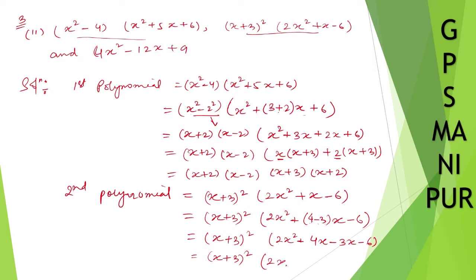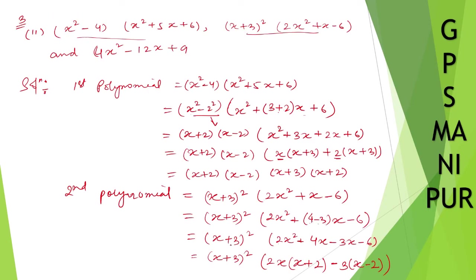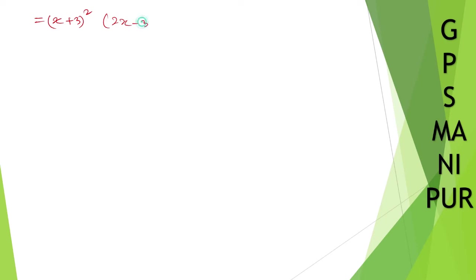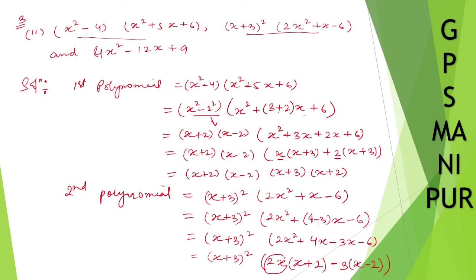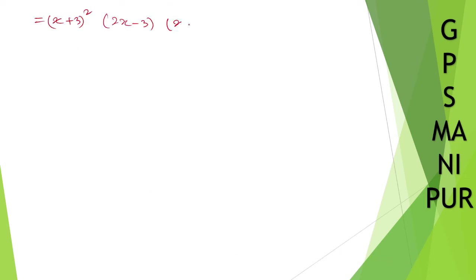Taking 2x common gives (x+2), and taking minus 3 common from the last two also gives (x+2). So 2x squared plus x minus 6 factors as (2x-3)(x+2). Therefore the second polynomial is (x+3) squared times (2x-3)(x+2). Now let us take the third polynomial.